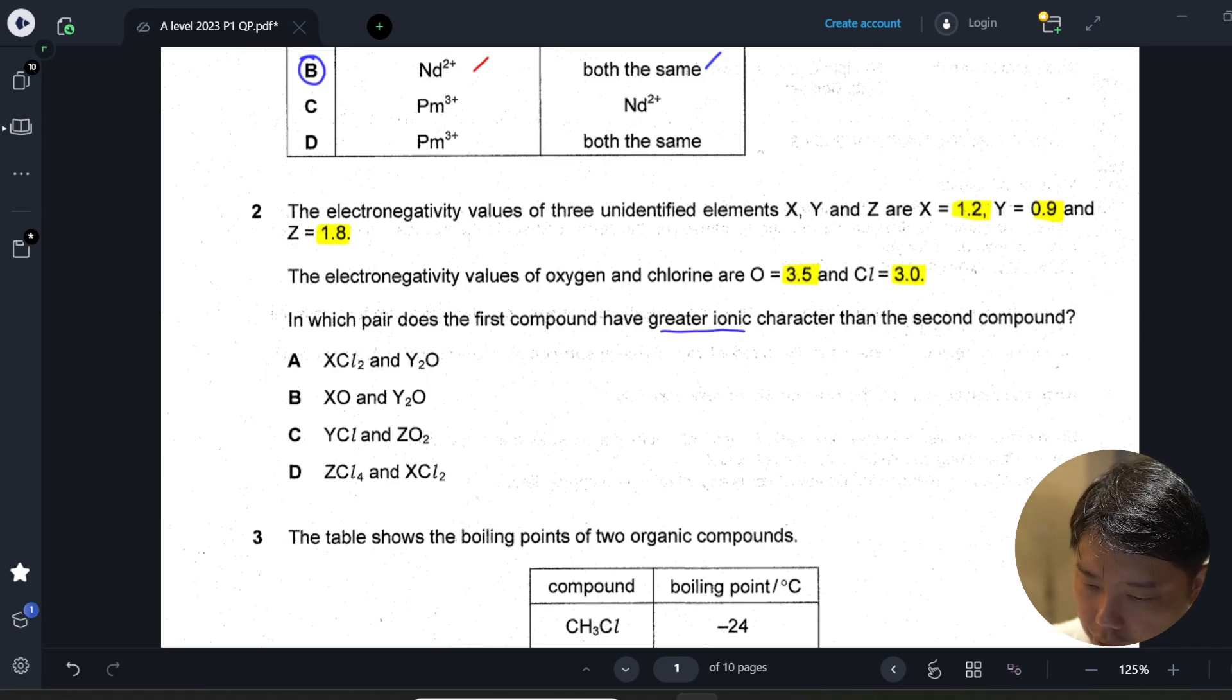When we talk about greater ionic character, we need to get the difference in electronegativity value between the cation and the anion. So it means that once you have greater electronegativity difference, you will have a greater ionic character.